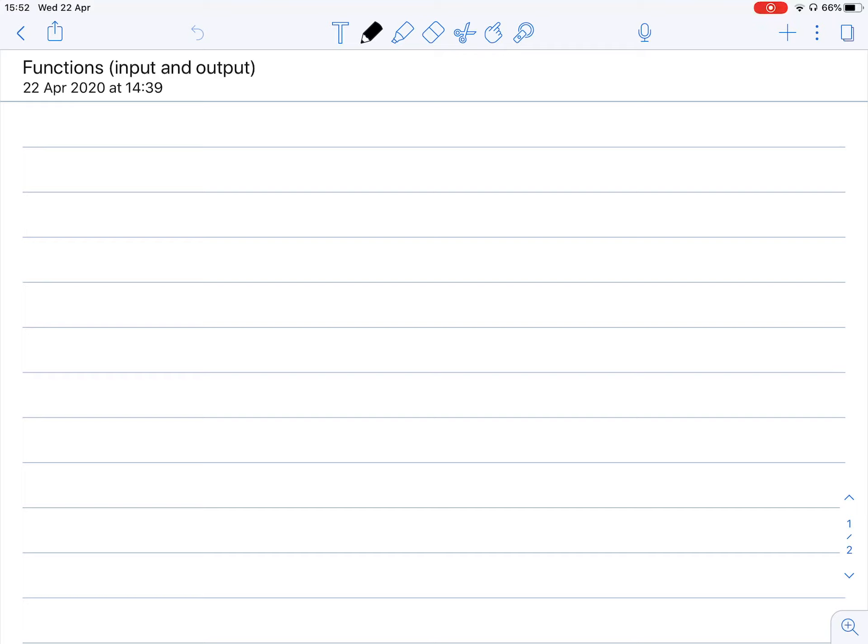So in some worksheets, you'll see something that looks almost like a machine, if you will, with a box system in the middle. And then you'll have values on your left, followed by values on your right. And this is evident in grades, if I'm not mistaken, three through to grade nine, obviously the level then expanding as we go along.